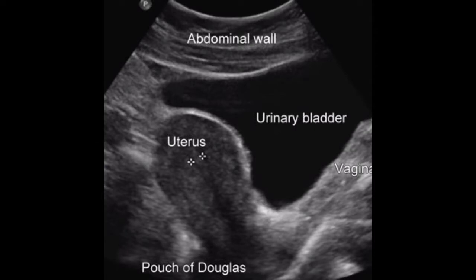The uterus is an extraperitoneal hollow, thick-walled, muscular organ of the female reproductive tract that lies in the lesser pelvis. It is inverted pear shape.